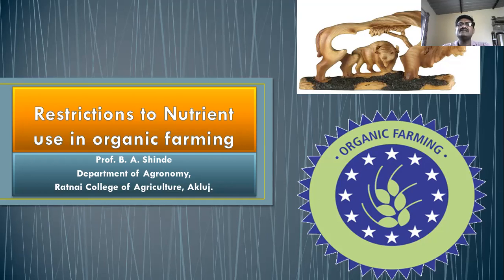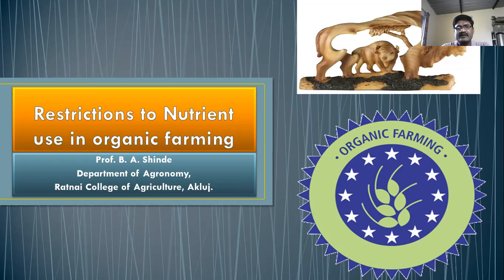The second term is Restrictions. Restrictions means it is partially permitted — such as 5 to 10 or 15% which have permissions to apply such amendments as well as nutrients used in the organic farm. The third is Prohibition, which means it is completely restricted.